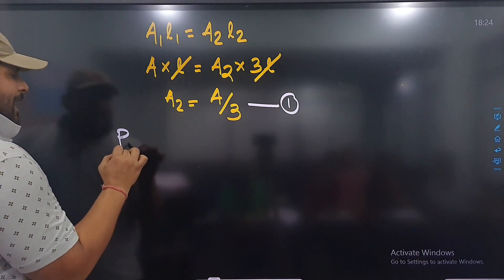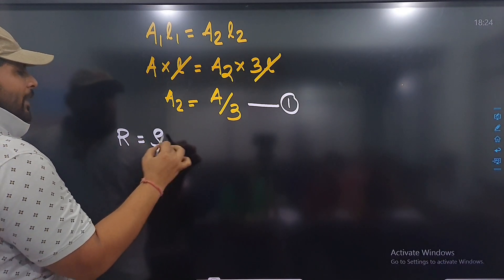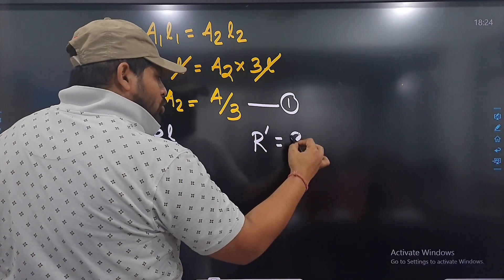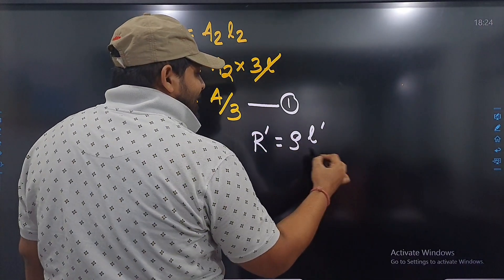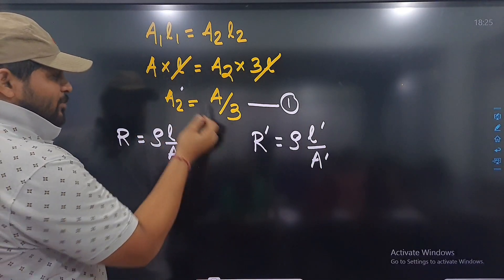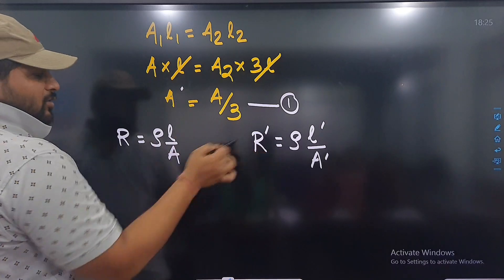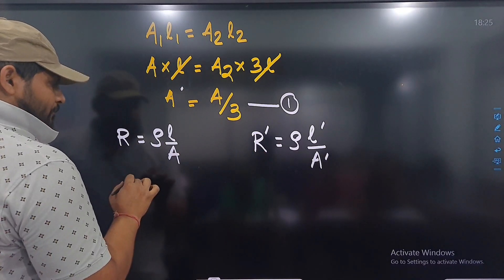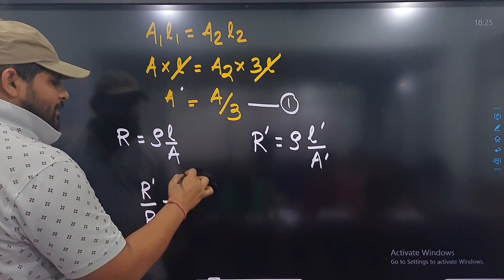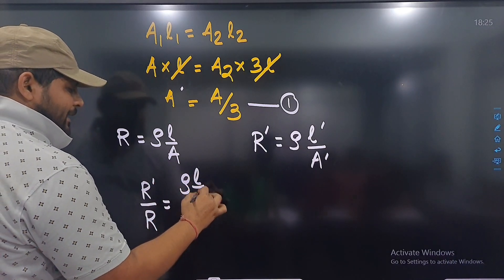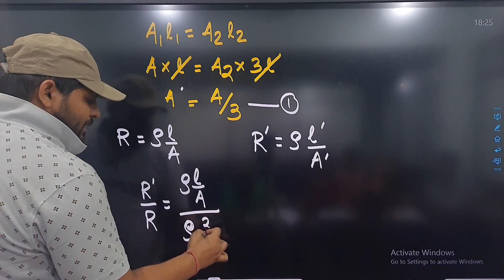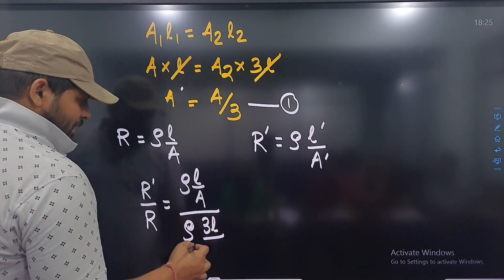Old resistance R = ρL/A। New resistance R' = ρ × L' / A' — because we are not changing the material। अब R' by R करते हैं: numerator में ρ, L' = 3L, A' = A/3 है।